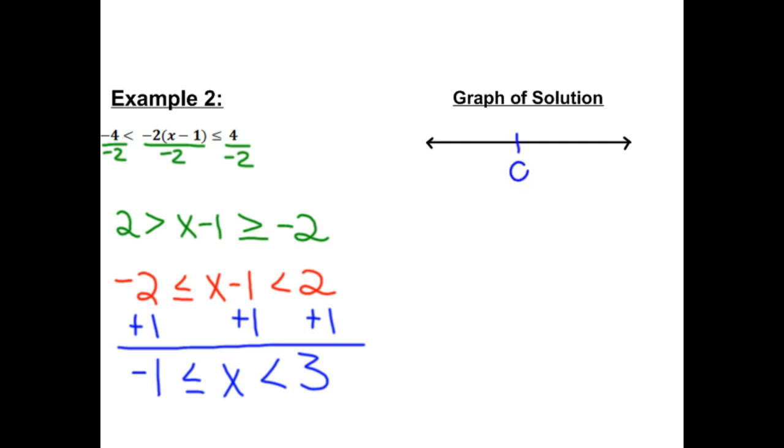On the number line, our boundary numbers are -1 and 3. I'm going to use parentheses and square brackets this time. I want to include -1, so that gets a square bracket. I don't want to include the 3, so I'll use a parenthesis there. I'll shade in between because those are all the values of x that are greater than or equal to -1 or strictly less than 3.